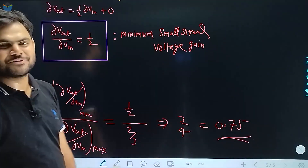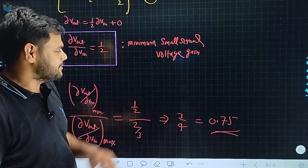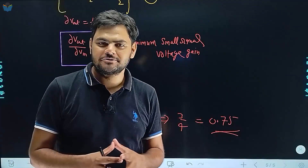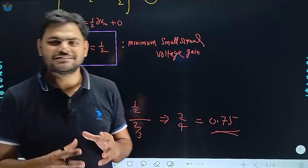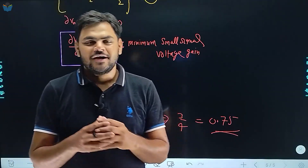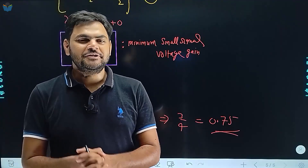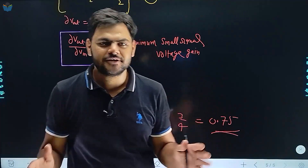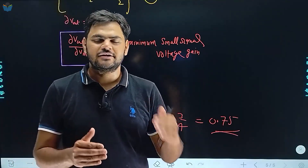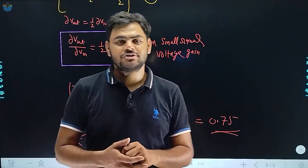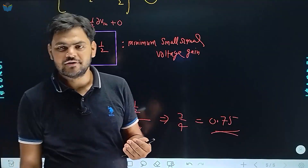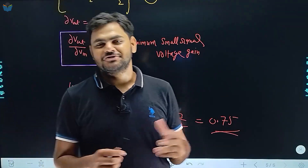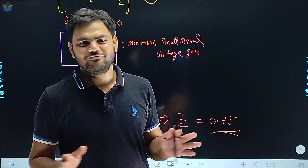Final answer of this question is 0.75. Hopefully आप लोगों ने जिन्होंने solve किया होगा same answer generate किया होगा। Diode के recent years के GATE questions हमने आज की class तक complete कर दिए। अगली class में हम BJT के questions की बात करेंगे। Thank you, that's all for today's session।